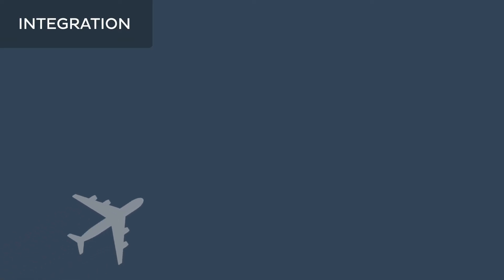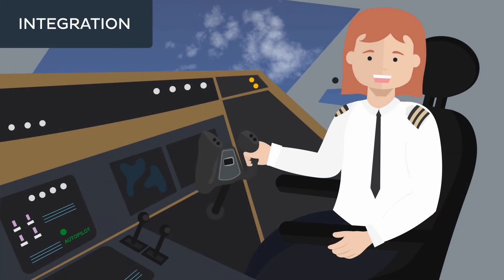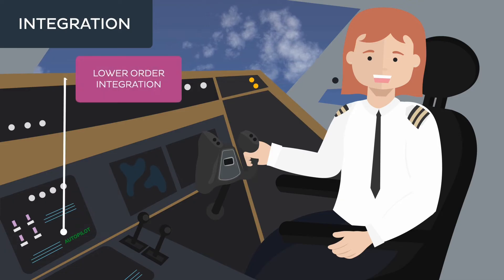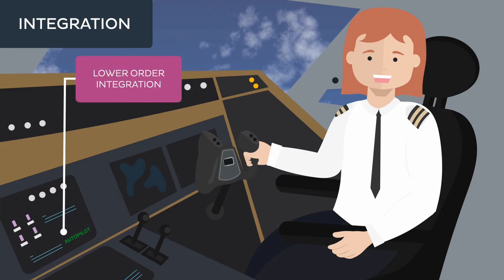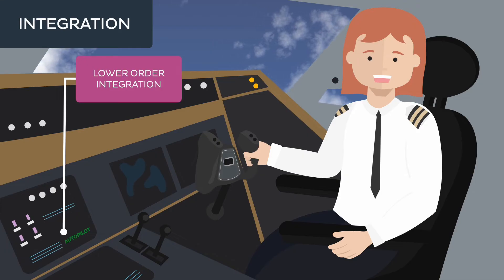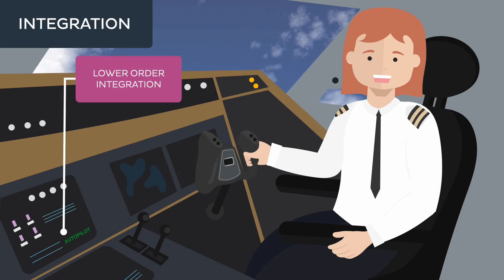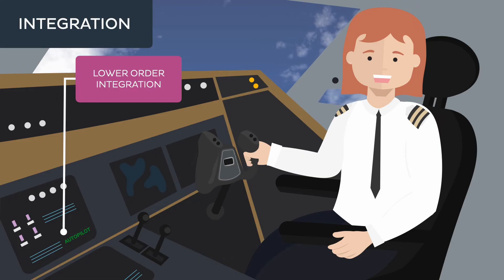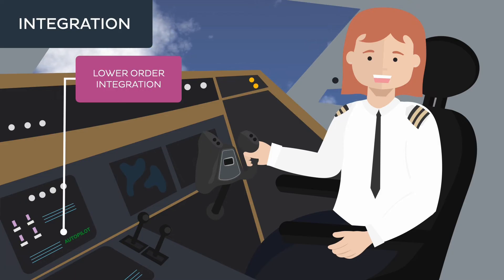Think of integration like an advanced plane navigating the skies of life. The flight management computer represents lower order integrative processes, responsible for basic routine tasks to keep the plane on course — maintaining stability through altitude control, speed regulation, and basic navigation — similar to how lower parts of the brain maintain basic bodily functions essential for survival without conscious effort.